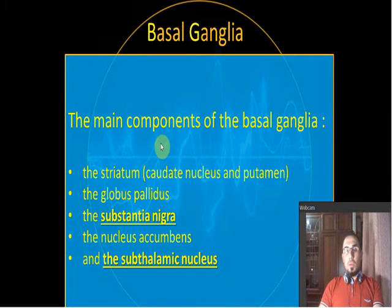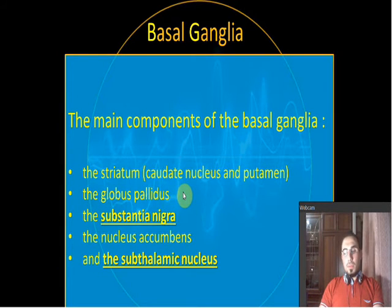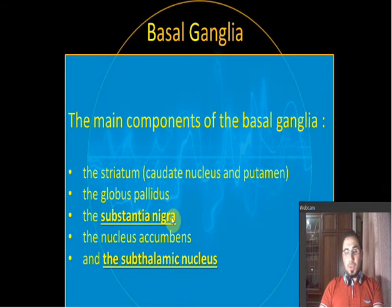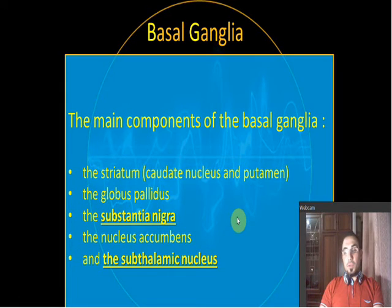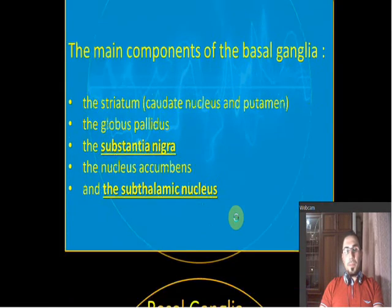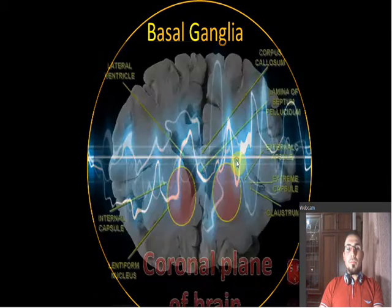We have five basal ganglia structures: the striatum, which is composed of the caudate nucleus and putamen; the globus pallidus internus and externus; the substantia nigra, which is by far the most important one because it's related to Parkinson's disease; the nucleus accumbens; and the subthalamic nucleus, which is also connected to Parkinson's disease to some extent.